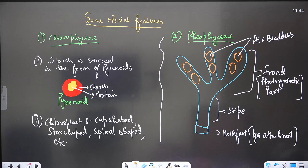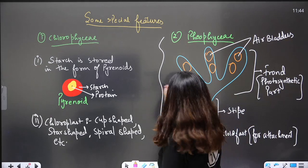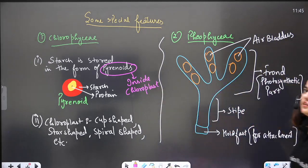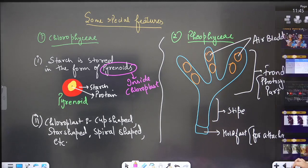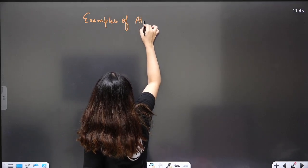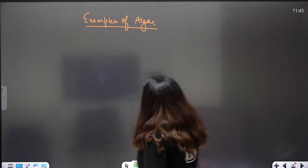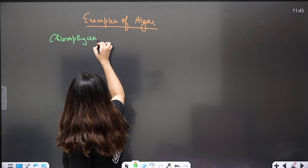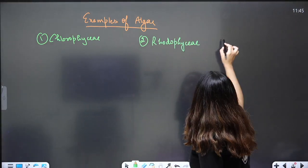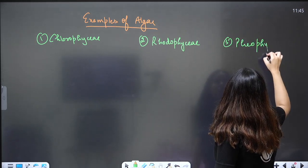After this, I am going to write some important examples that you need to remember, and then I will tell you the importance of algae. The examples are organized under Chlorophyceae, Rhodophyceae, and Phaeophyceae. Remember that pyrenoids are present inside the chloroplast.